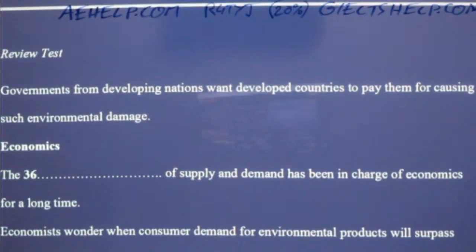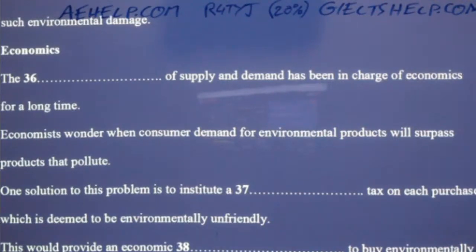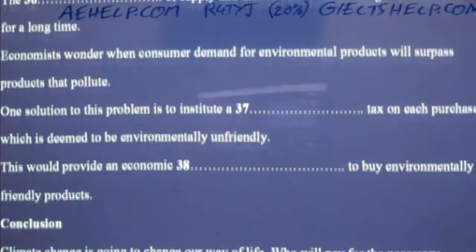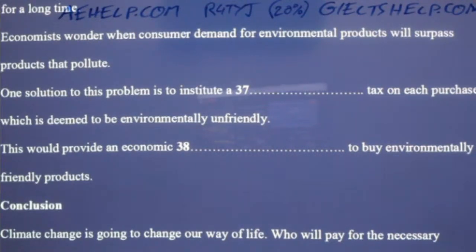The other major group that has profited from our increasing environmental degradation are corporations. Business has always been about production and consumption. The invisible hand of supply and demand has long run our economic system, and now there is an ever-growing demand for conservation. The question is: when will consumer demand be commensurate with green technological advances that allow for environmentally friendly products to actually be more profitable than those that pollute? One option to speed up this process is to have governments impose true cost taxes on every product that is sold, which would force prices to include an economic pressure to purchase or use products that will not cause further environmental degradation or carbon emissions.